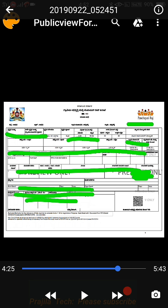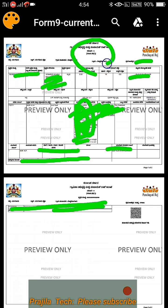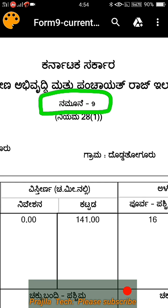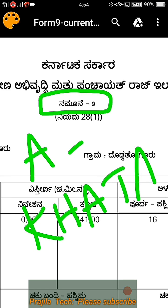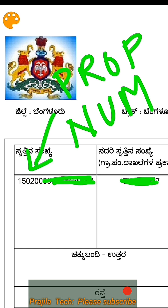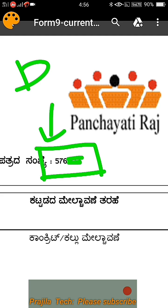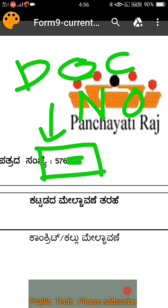Now let us have a look at how A-katha looks. This is the A-katha document — it will look the same as B-katha. But if you zoom in on top, the document type will show the number 9, which represents an A-katha. Remember, 11B is B-katha and form 9 is A-katha. If you scroll left, you can see the same property number, and on the right side you can see the katha number. Both documents look the same.